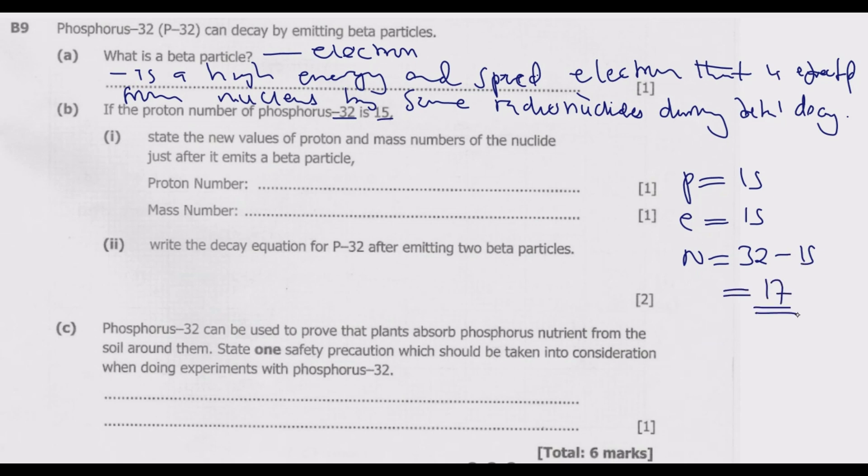After emitting the beta particle, one neutron will convert to a proton. So protons increase by one to 16, electrons increase by one to 16 as well because of the negative charge, and neutrons reduce by one to 16.